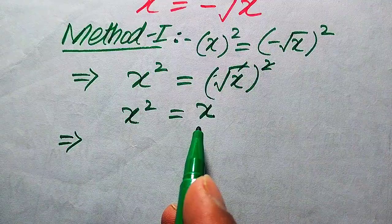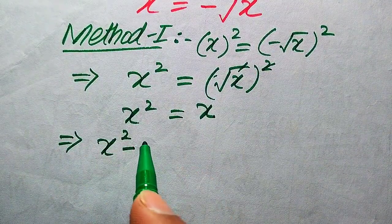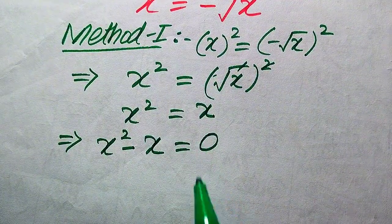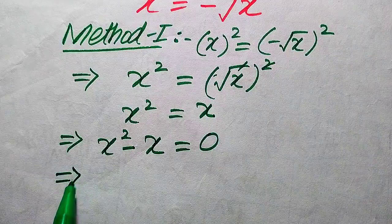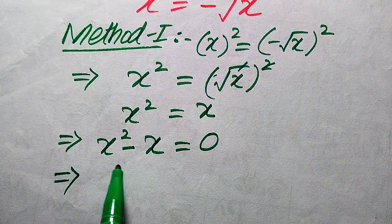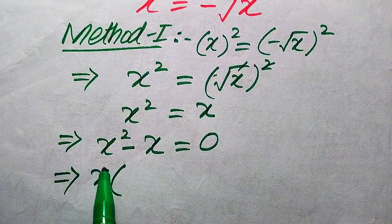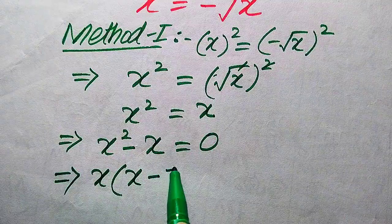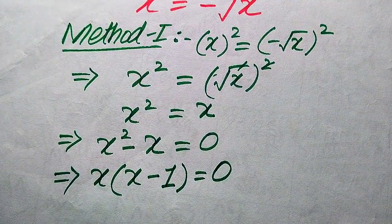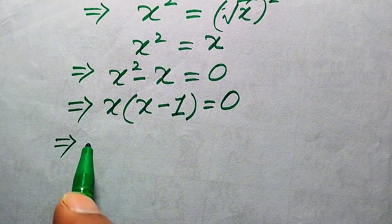In the next step we move this X from the right hand side to the left hand side. It becomes X squared minus X equals zero. Now we take common X from both terms, and we get X times (X minus 1) equals zero.